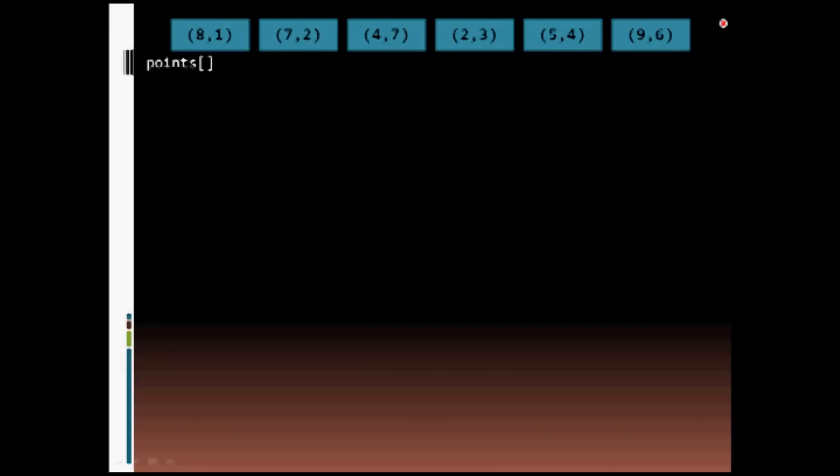So there's our input points as a vector, and we are going to turn that into a KD tree.